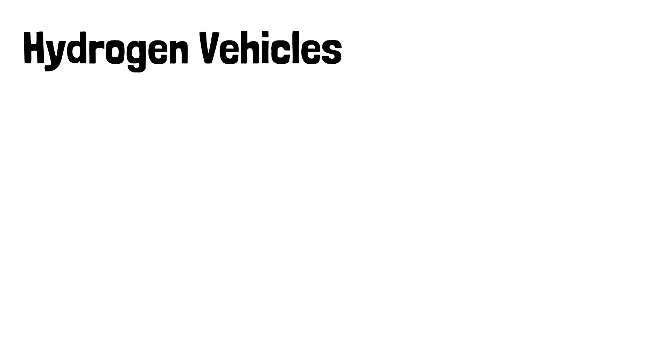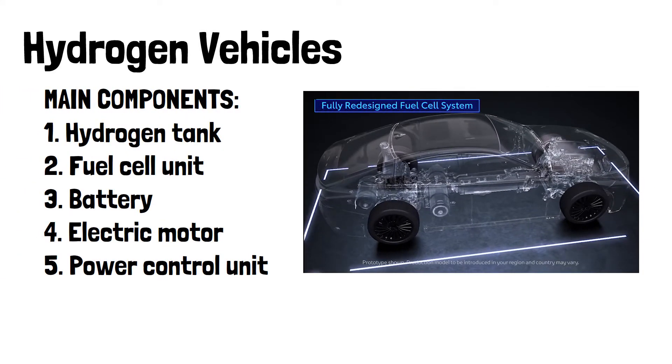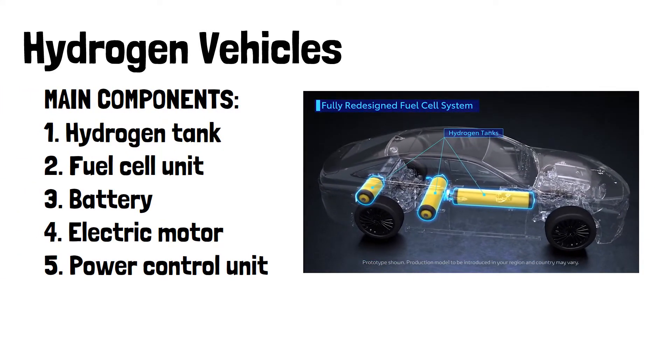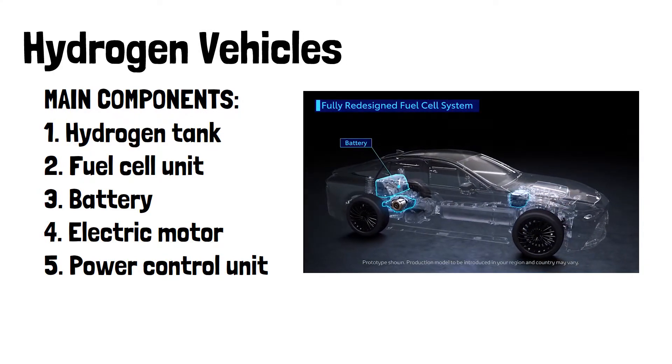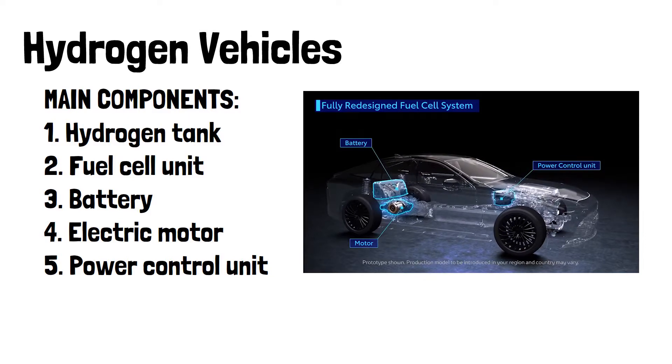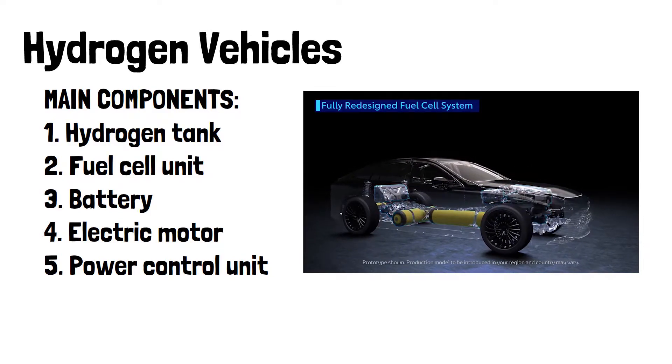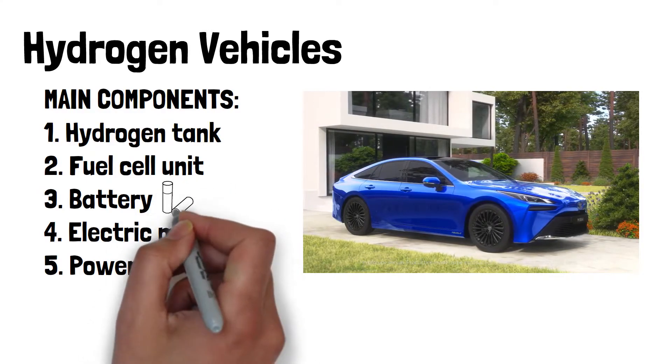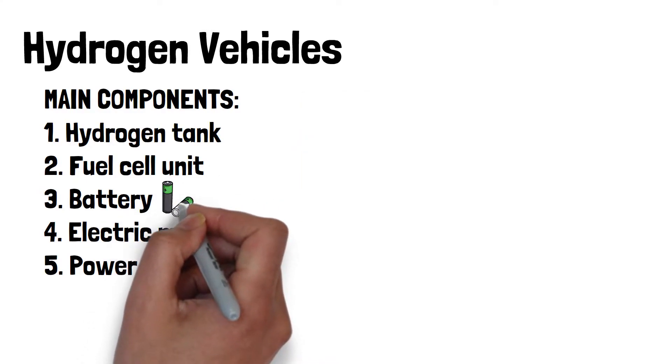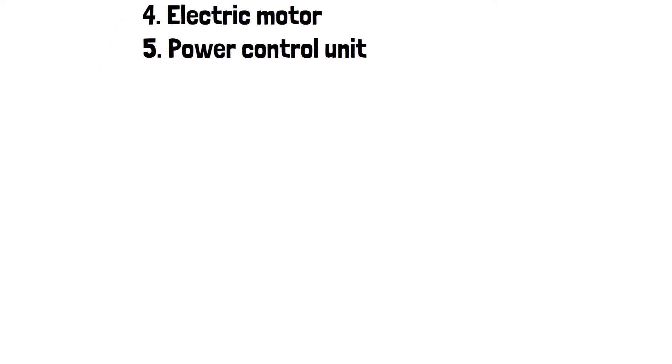First of all, let's name the main components of these cars. We have the hydrogen tank, the fuel cell unit, the battery, the electric motor, and the power control unit. That's right, hydrogen or fuel cell vehicles also have a battery, so technically they are hybrids, but they replace gasoline for hydrogen.